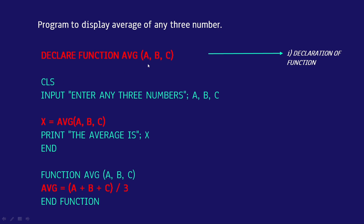Now CLS — CLS is used to clear the data from the output screen. After that, the INPUT statement is used to take input from the user. If we write INPUT with any three numbers a, b, c, the user will enter some values. Let's assume the user enters 10, 20, 30 — so 10 is stored in a, 20 in b, and 30 in c. After taking input, we can call the function.